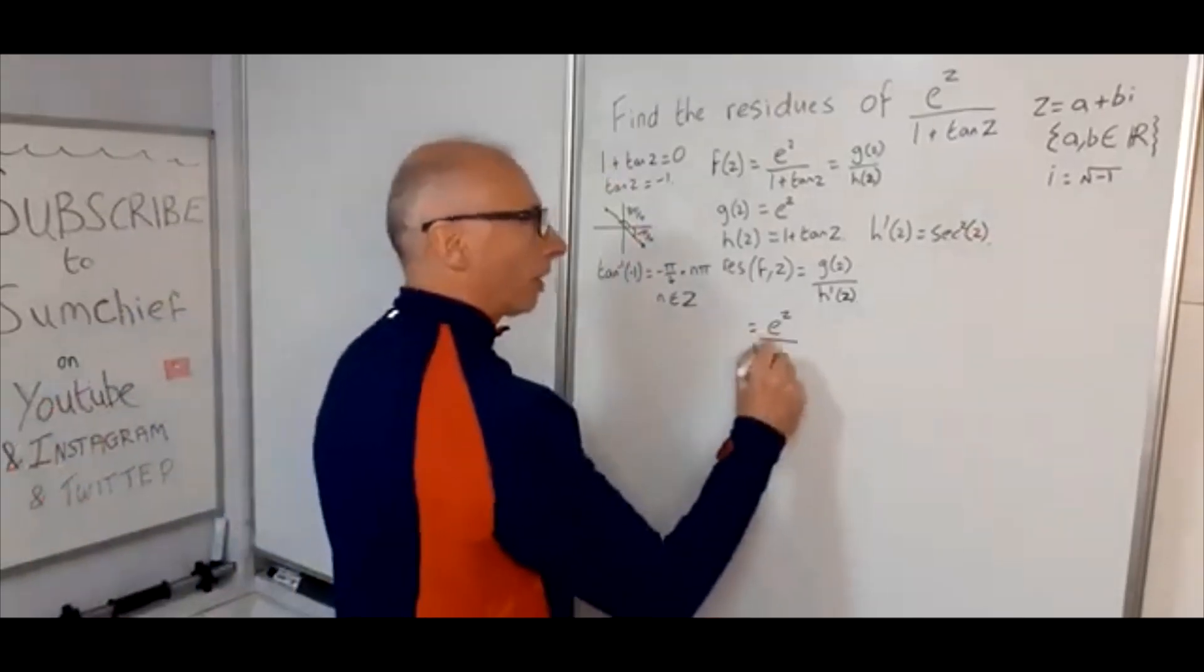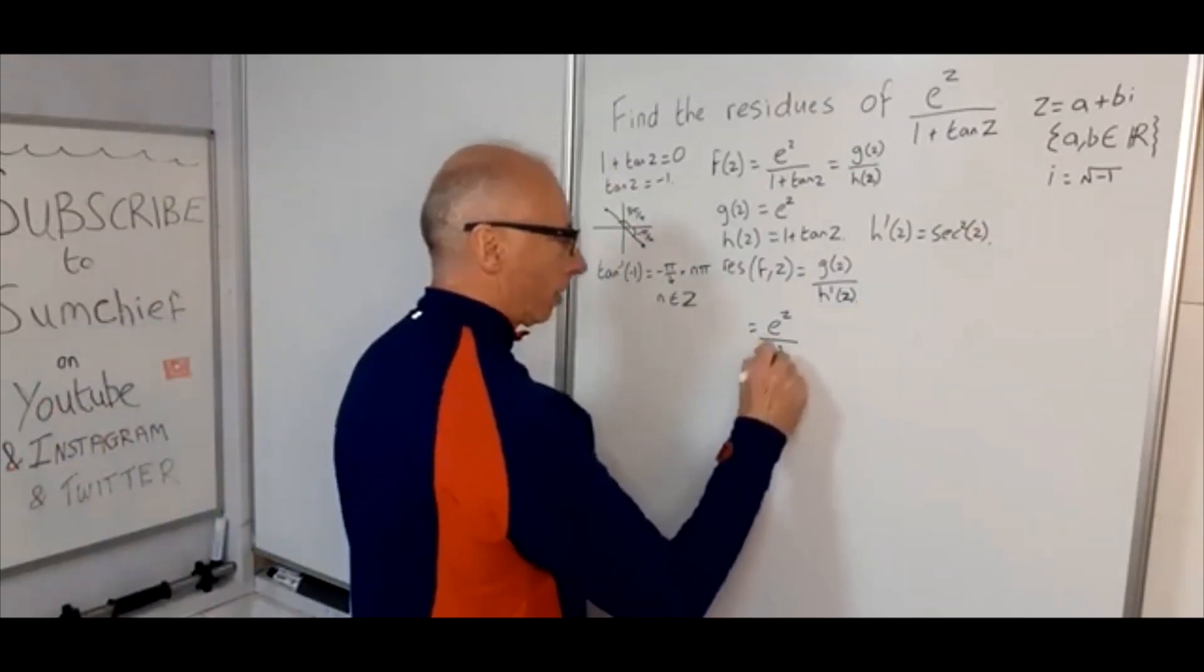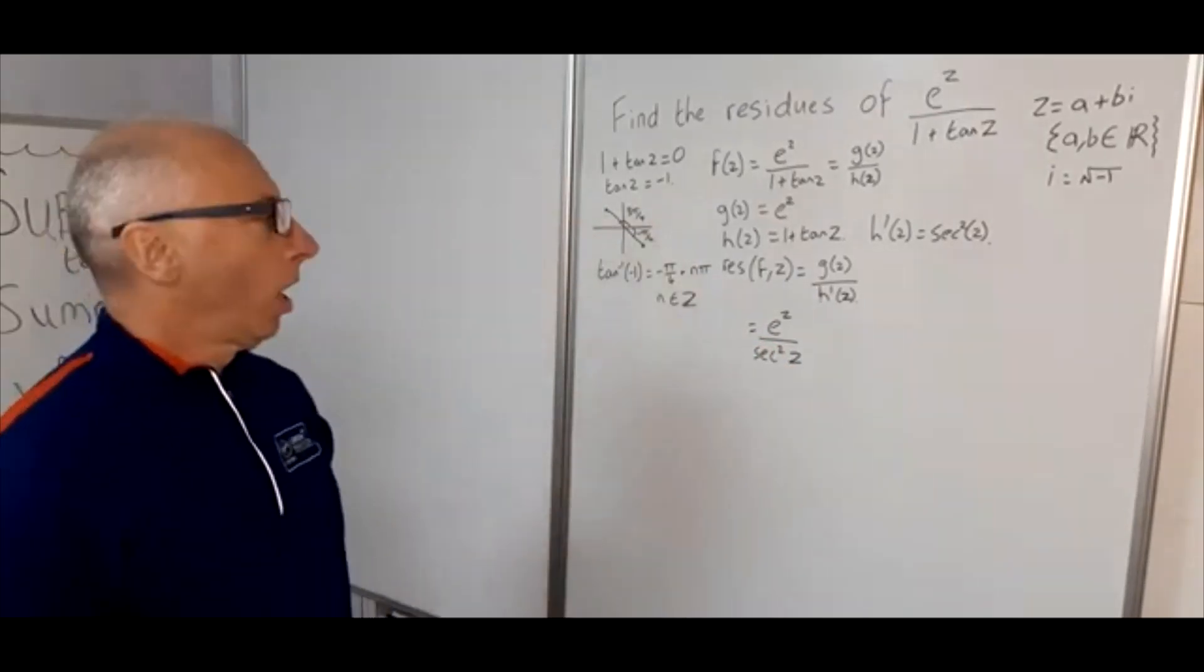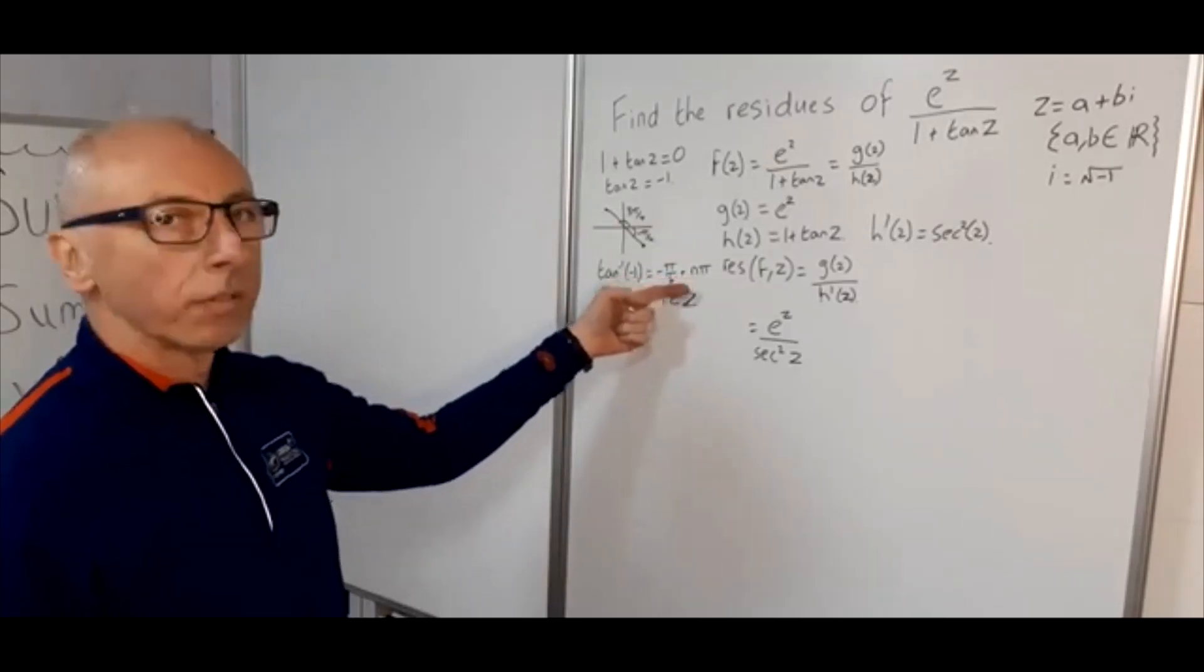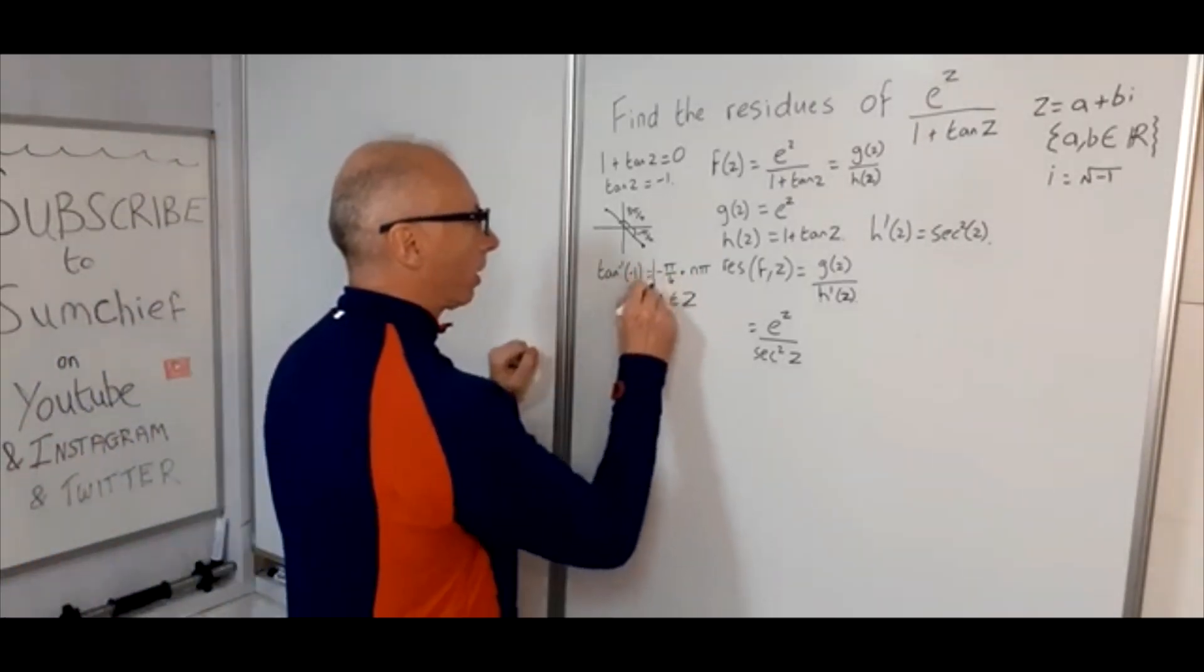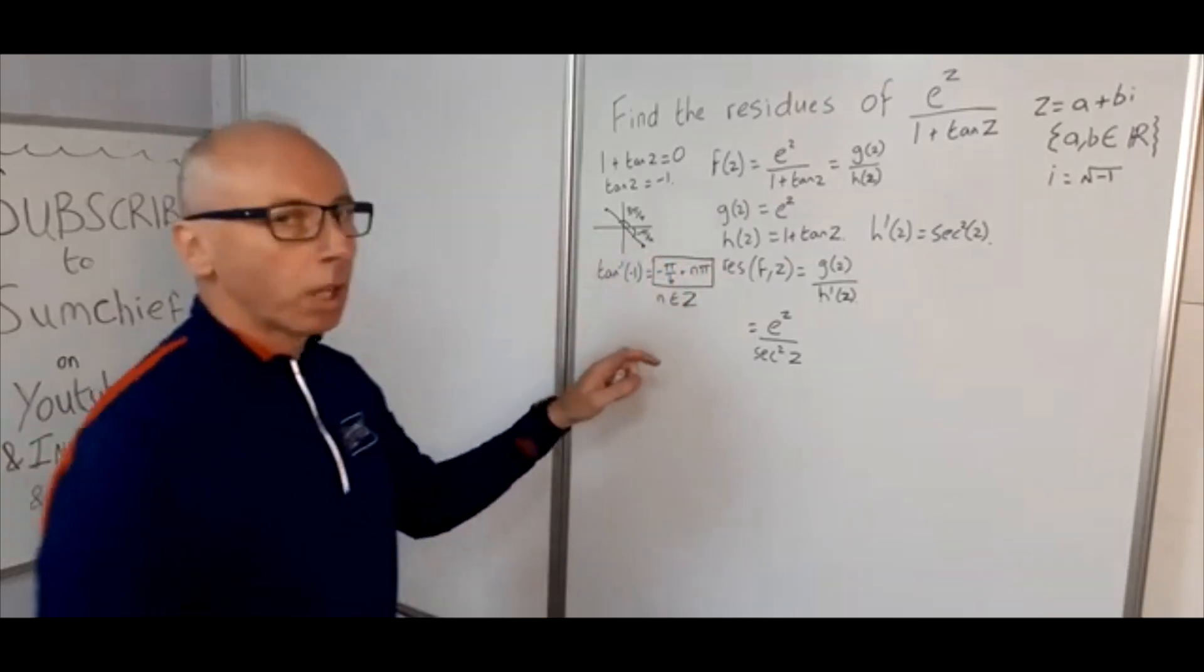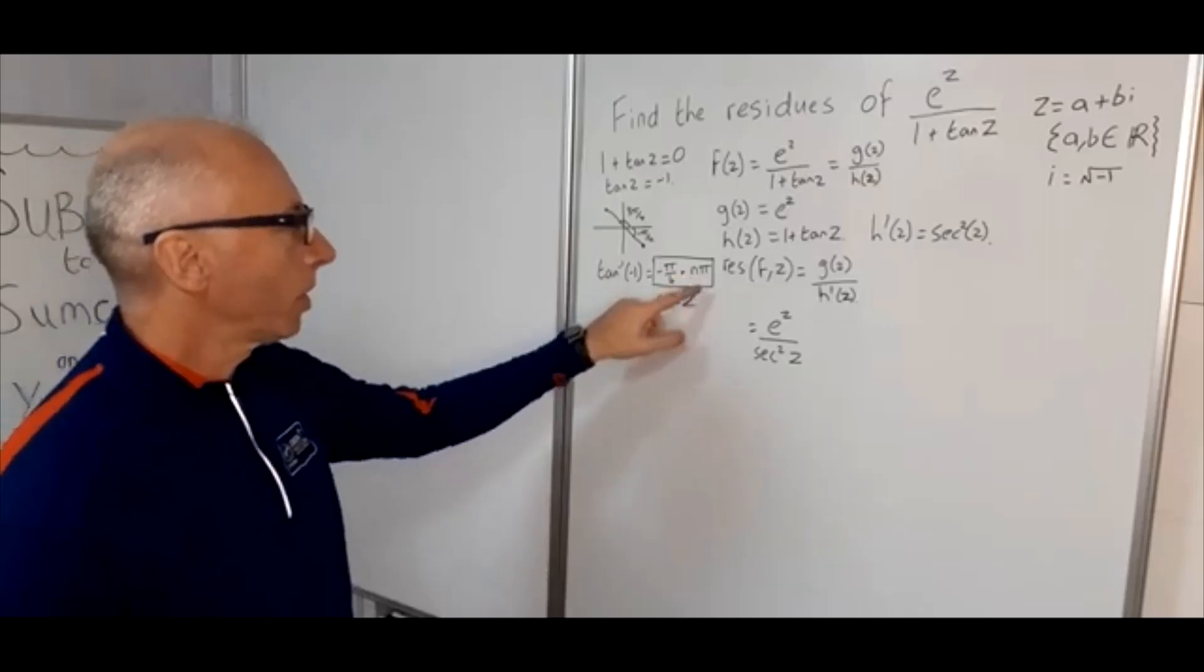So now we can plug into the denominator sec²(z). Okay, so the next thing we need to do is to plug in for z where we've got our residue. So our residues are here. This is our residues. So it's a little bit more complicated—there's quite a bit of work to do here just yet. So minus π over 4 plus nπ.